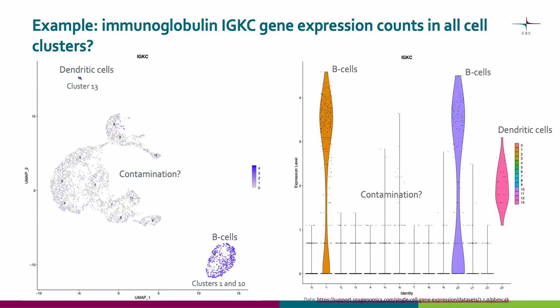We will take a look at an example to get an idea of how the CellBender background removal method affects downstream analyses. This is an example using single cell gene expression data from peripheral blood mononuclear cells. We have not removed any background contamination counts from the data. We have identified some clusters and we know that the gene IgKC should be expressed by B cells. However, we see that all of the cell clusters express IgKC, so some of it could be contamination.